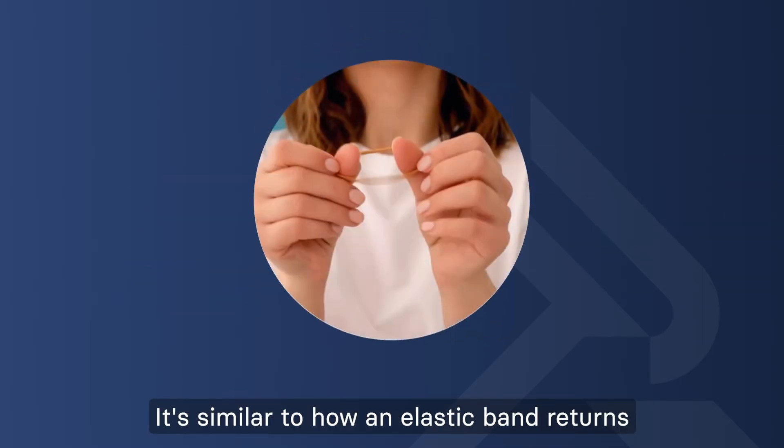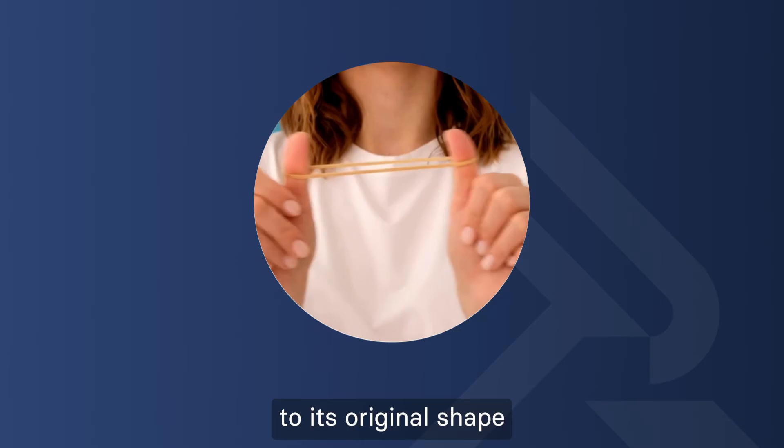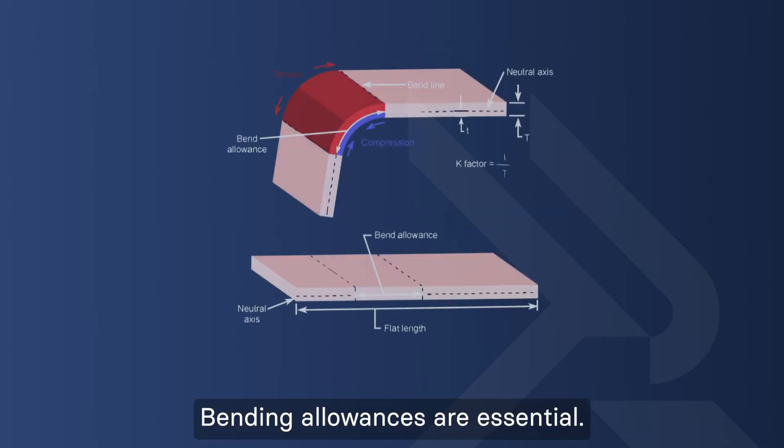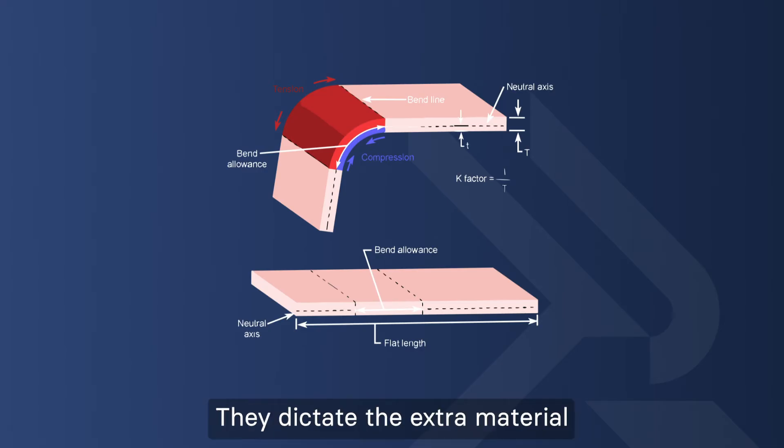It's similar to how an elastic band returns to its original shape after being stretched. To counter this, bending allowances are essential. They dictate the extra material you need to bend to achieve your intended angle accurately.